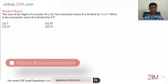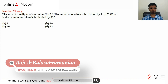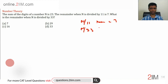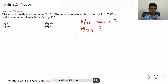The sum of digits of a number n is 23, and the remainder when n is divided by 11 is 7. What is the remainder when n is divided by 33? There are a bunch of simple ideas here — two key ideas.